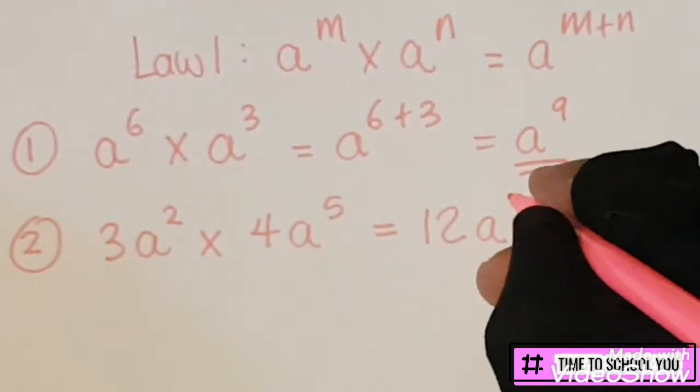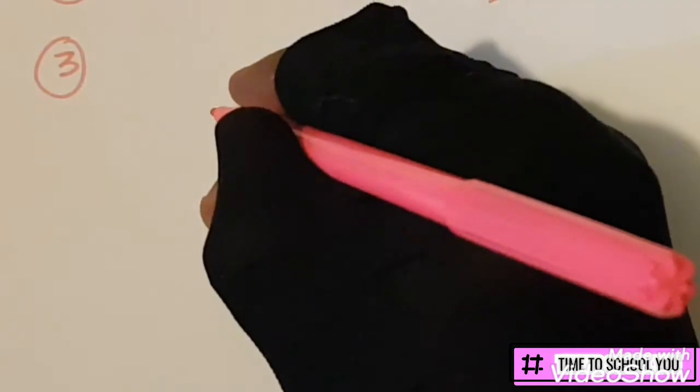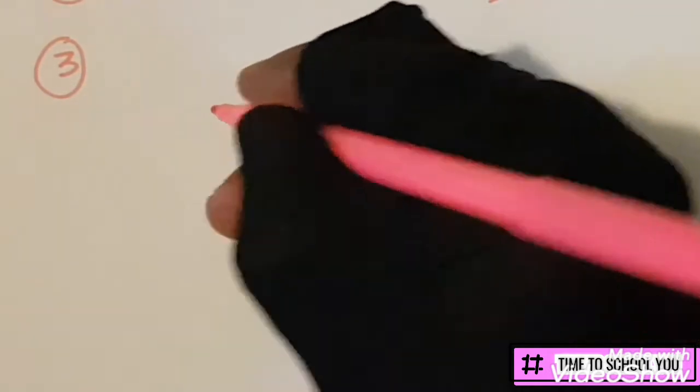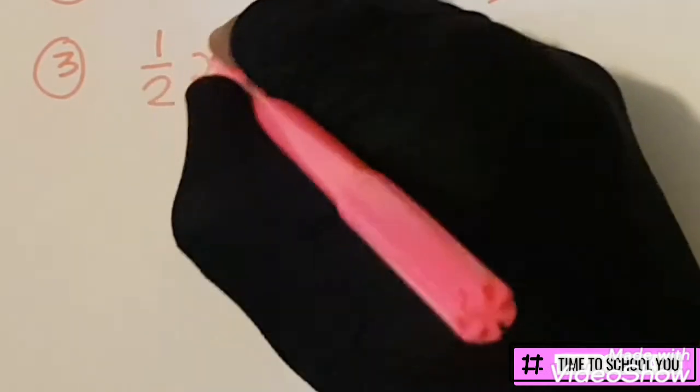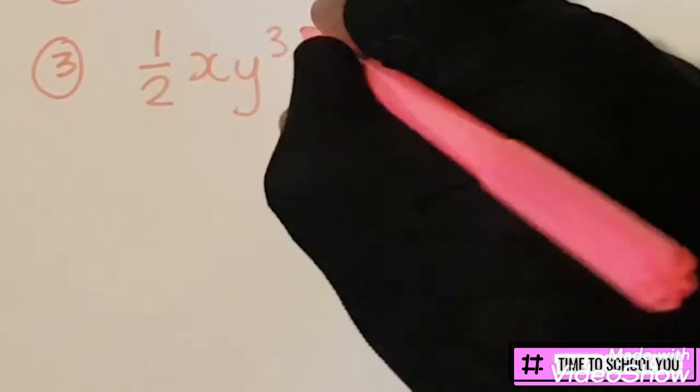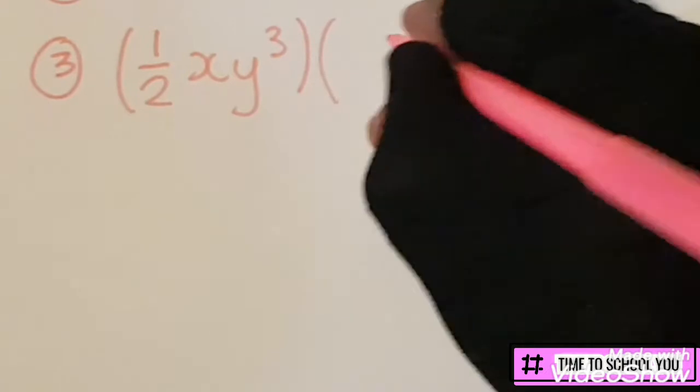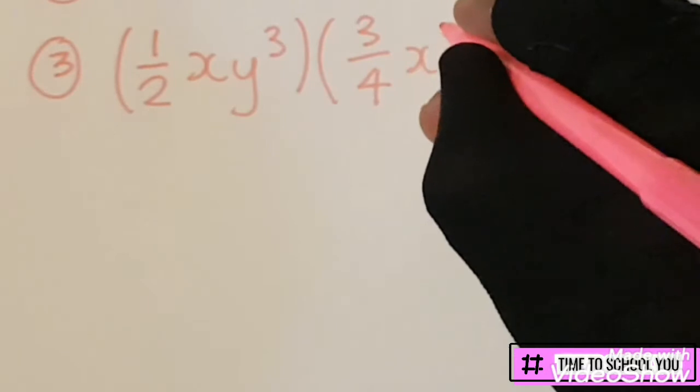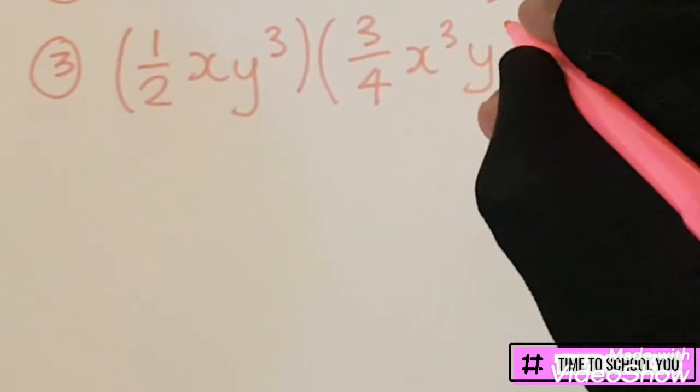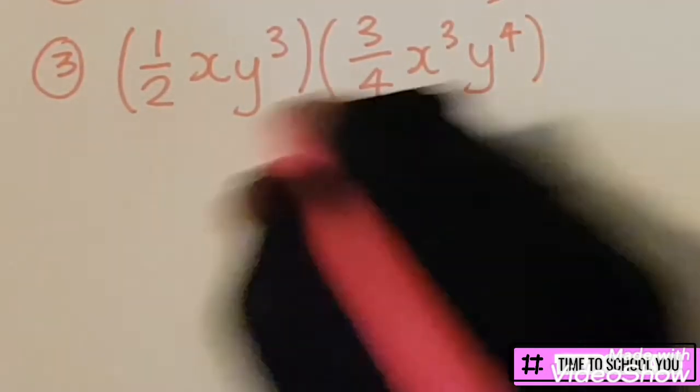The third type we can get is where we get fractions. You can get 1/2 xy^3 times, let's make it 3/4 x^3 y^4. So this type here, basically what we need to do is we need to multiply the numbers.